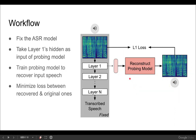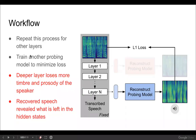The reconstructed output from layer 1 doesn't differ much, since it's only one layer deep and almost no information is lost. Then we repeat this process for other layers and train another probing model to minimize loss. For example, here we take the last layer of ASR hidden states and train another probing model.